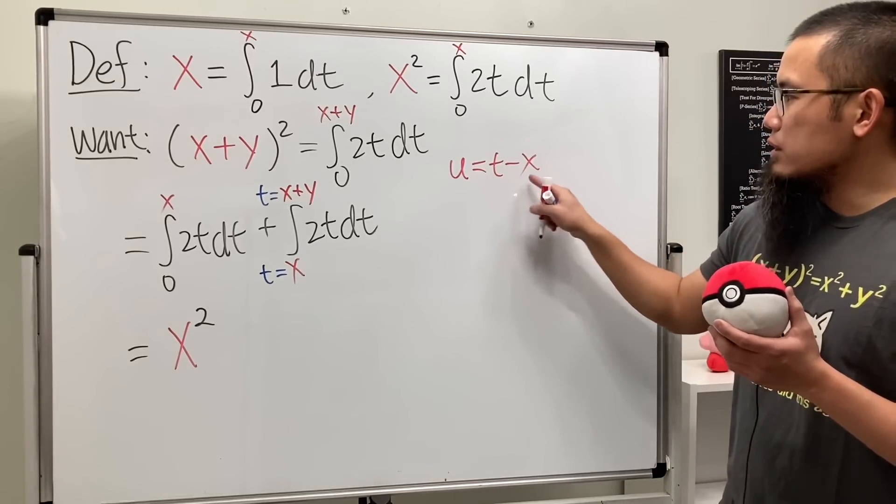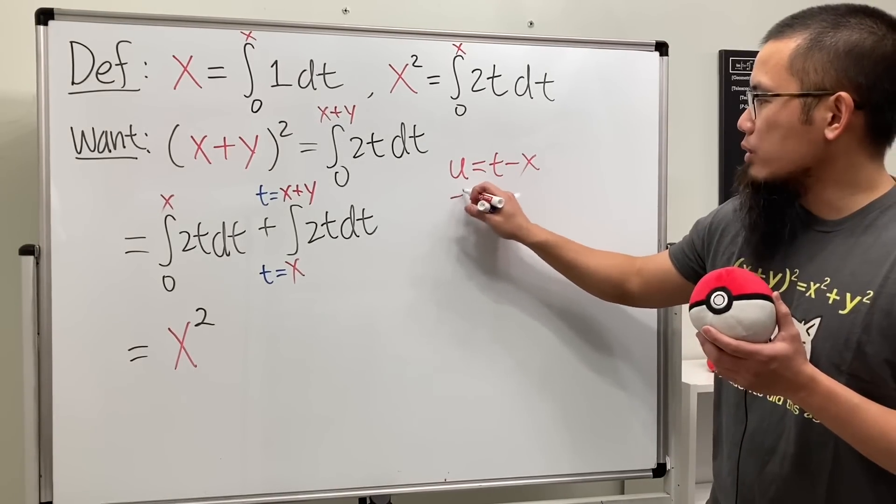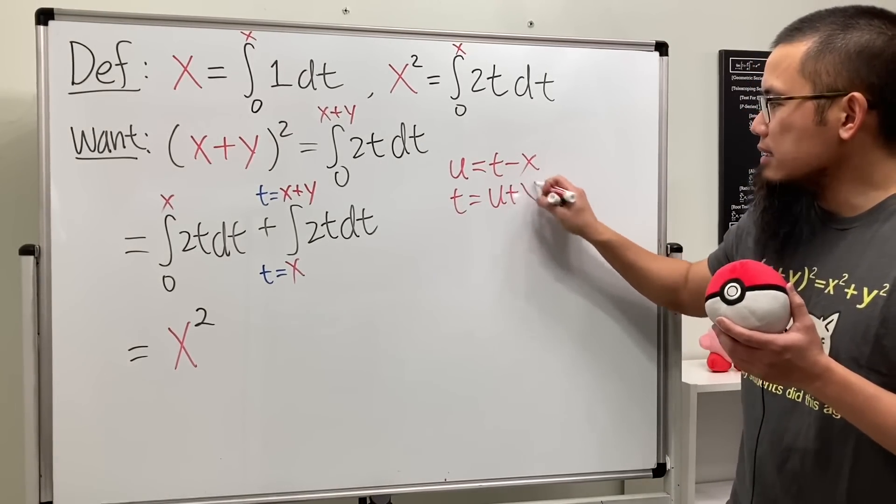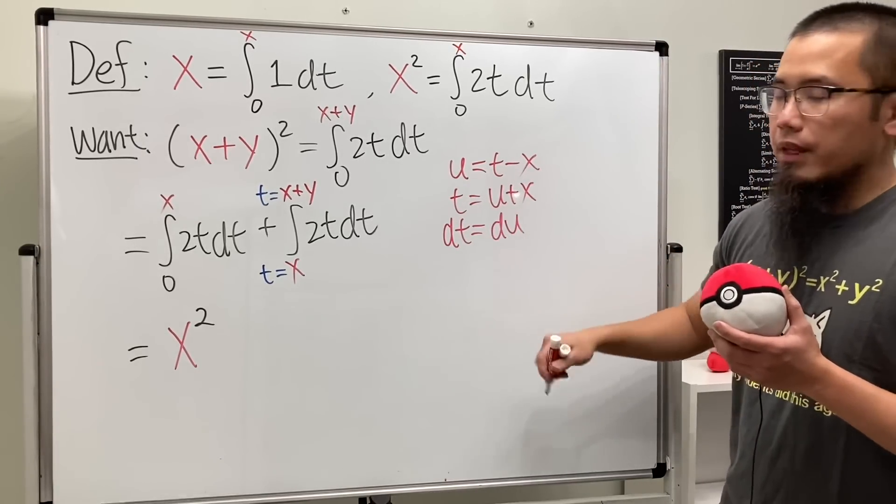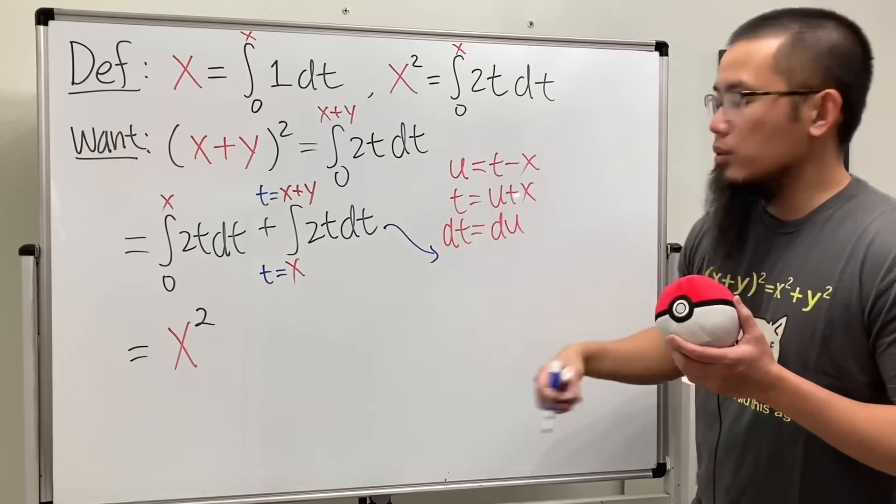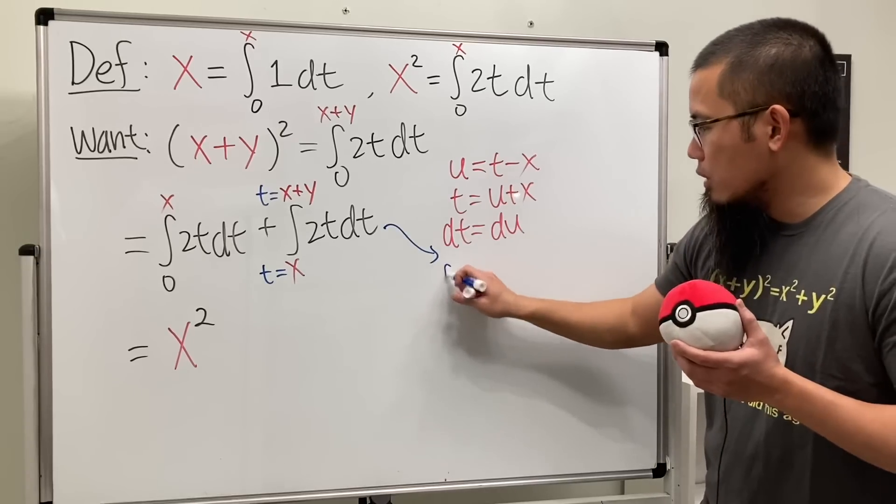And let me just isolate the t first. I will add that on both sides. So we know t is equal to u+x, and then differentiate both sides. dt is equal to du. And then, we will take this integral to the u world. Okay.